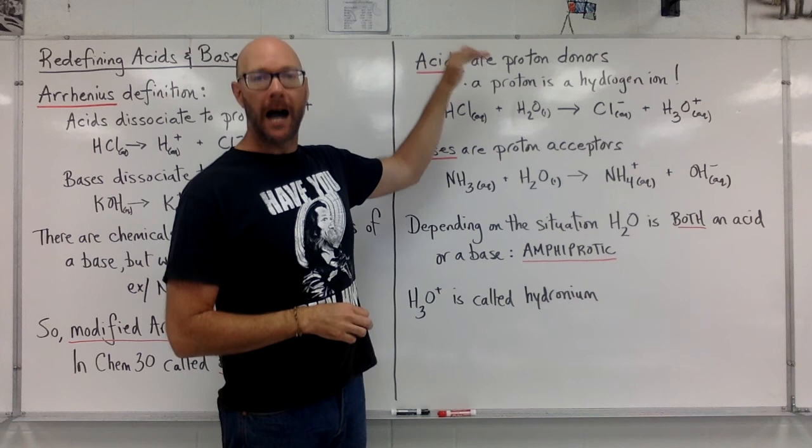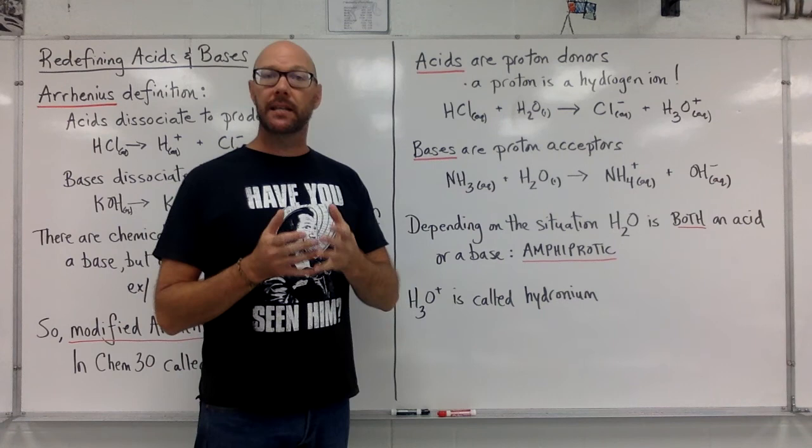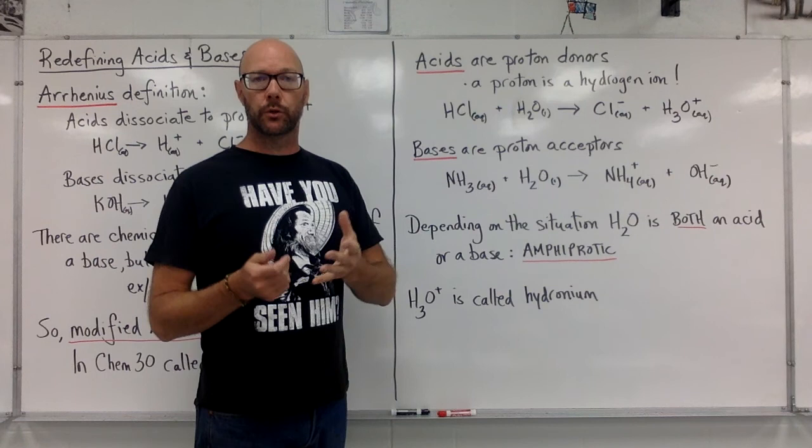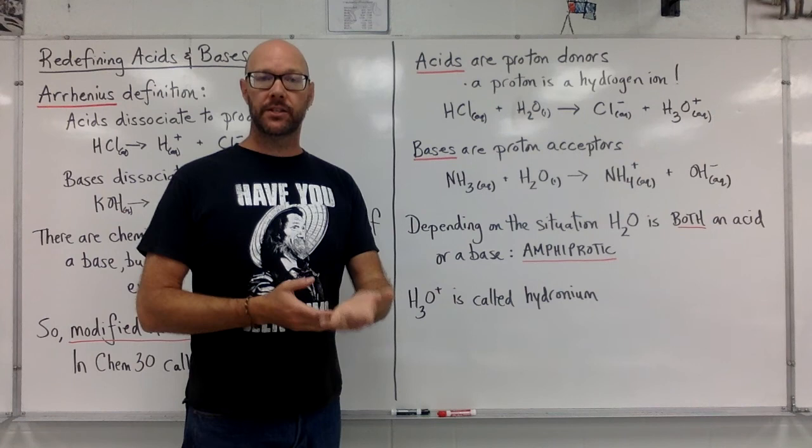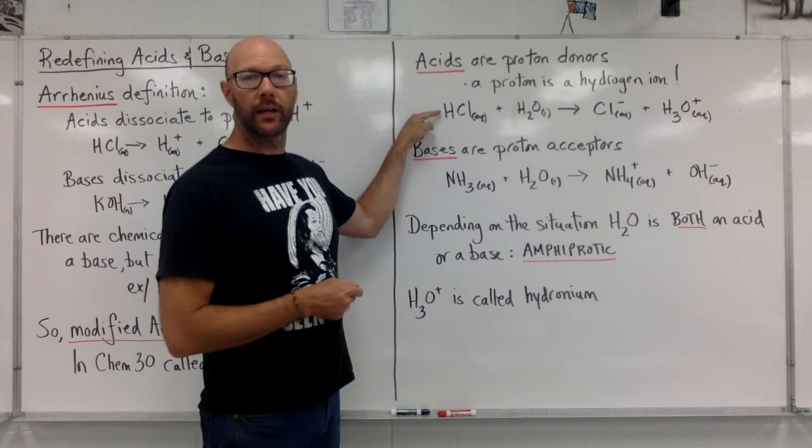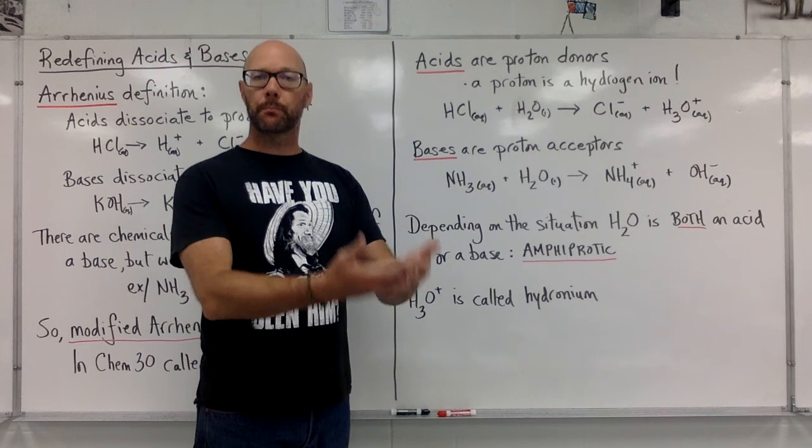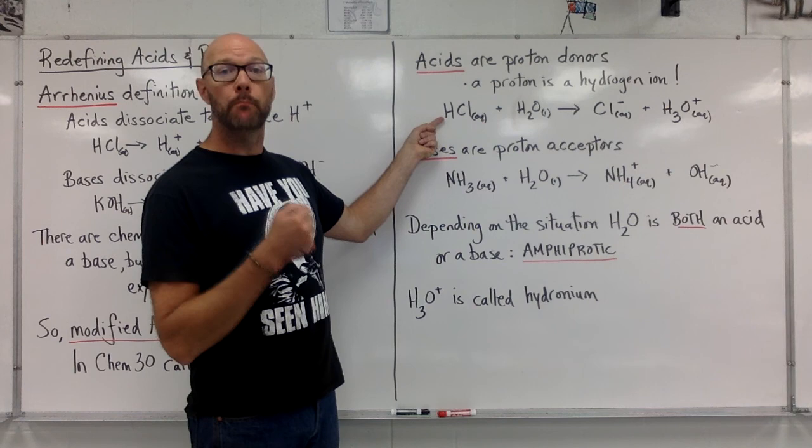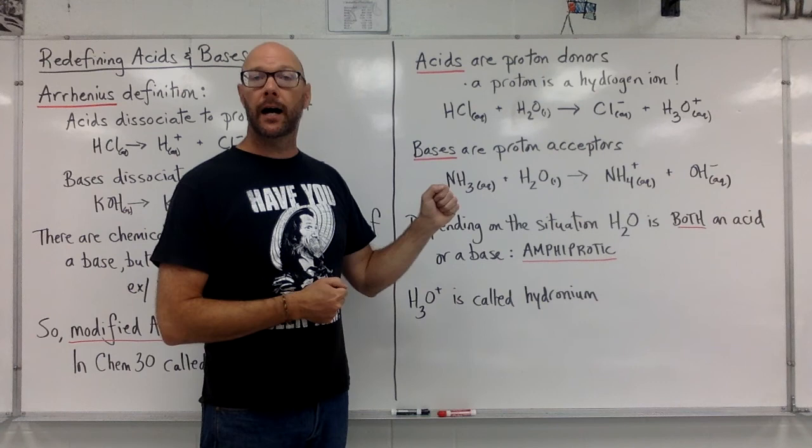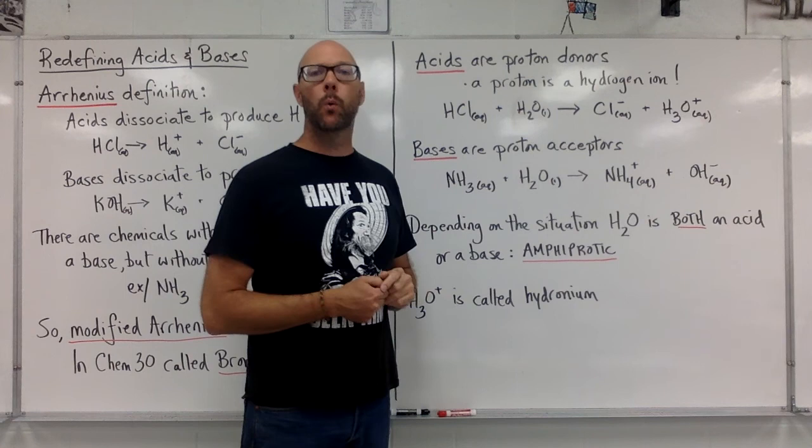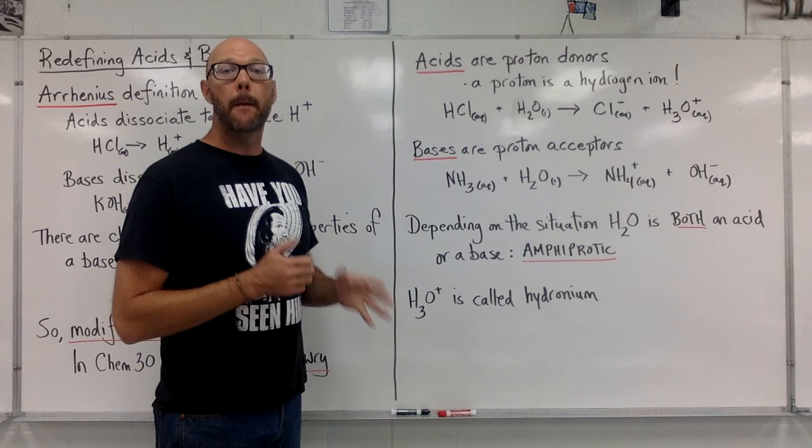But over here, acids are proton donors. Acids are hydrogen ion donors. But when we think about the reaction, it's quite noticeably different. Hydrochloric acid is an aqueous solution. That means it's in water. And according to this modified Arrhenius theory, or what we're going to call Bronsted-Lowry in the future, the hydrochloric acid actually reacts with the water in its container. The acid donates a proton to the water. This H+, the proton, moves from the HCl to the water. If we take the hydrogen away, we get the chloride ion. And H2O picks up this H+, we get H3O+, which is called a hydronium ion.